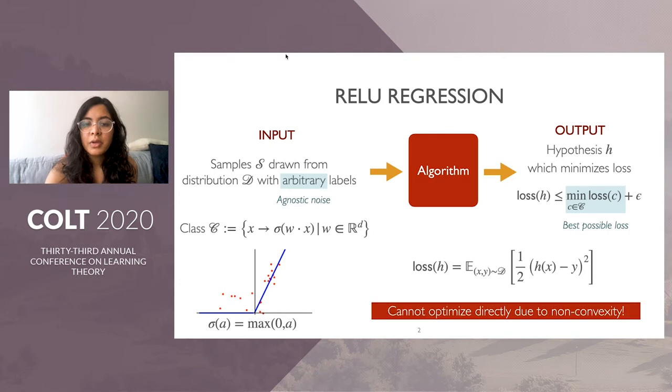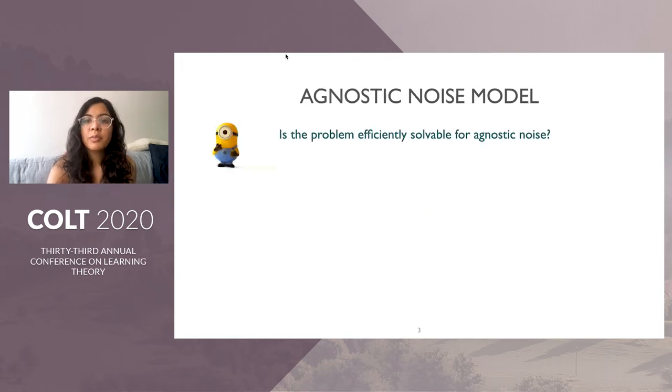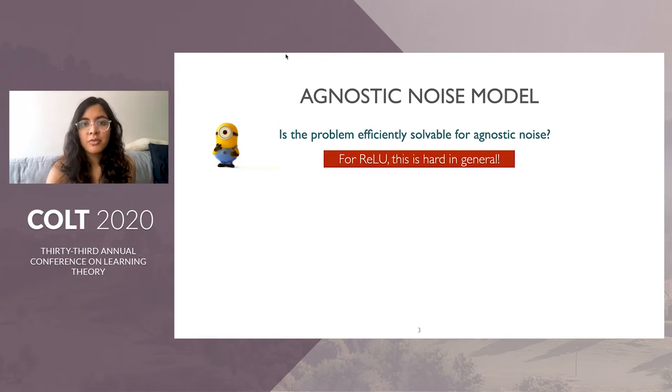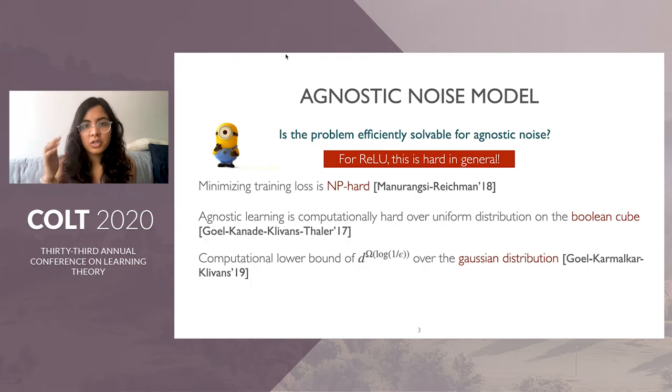This is challenging because the loss is nonconvex due to the nonlinearity lying inside the squared loss. So the first question is: is this problem efficiently solvable for agnostic noise? Unfortunately, this is not true without assumptions on the distribution. There's been prior work showing hardness in different setups, including that minimizing training loss is NP-hard and that under standard computational hardness assumptions, learning over the Gaussian distribution has super polynomial lower bounds.